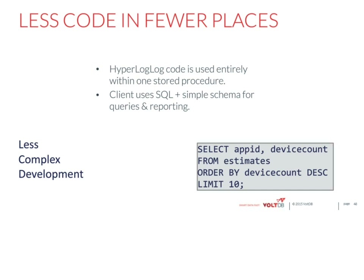Because the HyperLogLog code is completely used by the stored procedure, clients don't need to know anything about it. They can simply run: SELECT app_id, device_count FROM estimates ORDER BY device_count DESC LIMIT 10 — just SQL for the top 10 apps. In a lot of other systems, the client would also have to know how to process the HyperLogLog. VoltDB also provides flexibility: you could change the procedure to use an exact count up to 1,000 and an estimate after that without changing client code at all. VoltDB ships examples of exact, hybrid, and pure-estimate counters in the unique devices app.